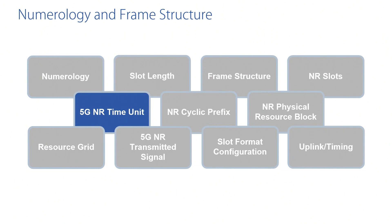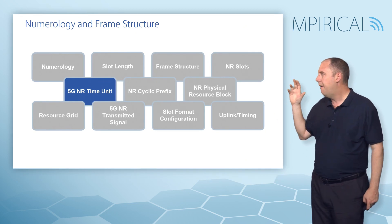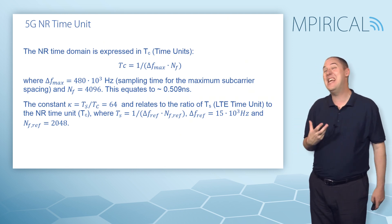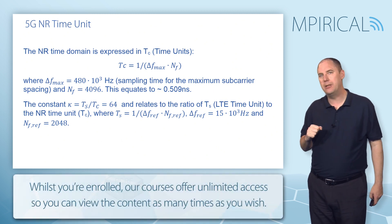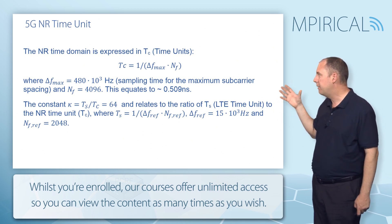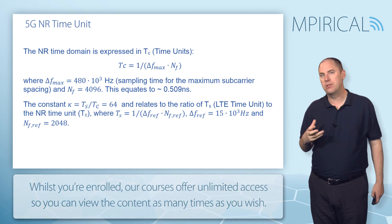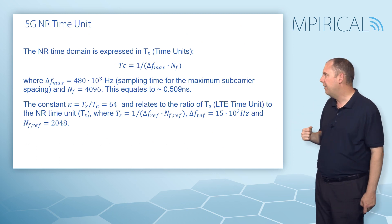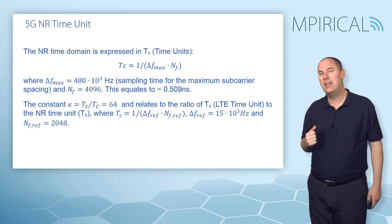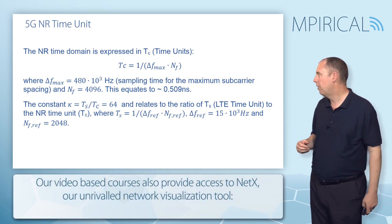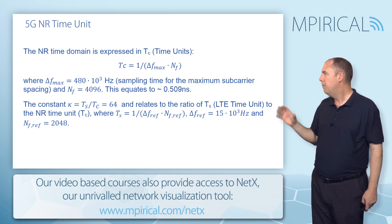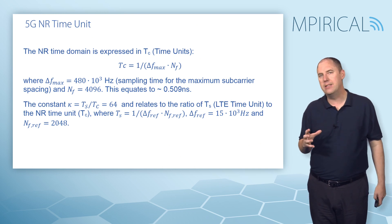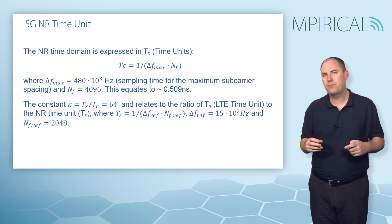So two more things as part of part 1: first the time unit, then we move on to cyclic prefix. A 5G time unit — what's that? In 4G we had time units called TS. In 5G we have something called the TC value. The TC value is given by the equation: 1 over delta frequency max times N, where N is 4096. This is linked to fast Fourier transform sizes in the system. The F max is 480 kHz, which is the current maximum as far as the numerology standardization is concerned. What you get are these time units — approximately 0.509 nanoseconds. Everything on the air interface is expressed as multiples of this time unit.